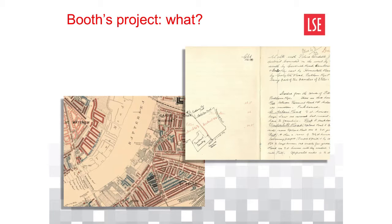So how did he do this? Well, the project team actually went and walked the streets of London and talked to people — policemen, school board visitors, religious figures, and residents and workers themselves. They recorded data, both qualitative and quantitative. We hold the full archive at LSE Library; it's a jewel in the crown for us. Of note are the poverty maps — 12 of them — and the notebooks, including the police notebooks, which relate to particular areas, so amenable to geolocation.